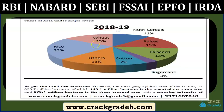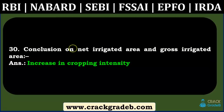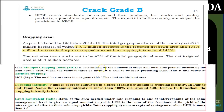Cropping system with maximum area in India — rice-wheat — is covered in General Agriculture with 2018–19 data from the Ministry of Agriculture: 23% area under rice and 15% under wheat. The question on net irrigated area and gross irrigated area — increase in cropping intensity — was covered in the static part. Cropping intensity is 142%, derivable from net sown area and gross cropped area.